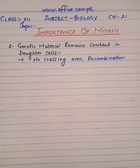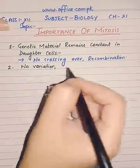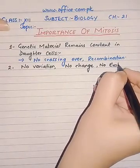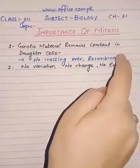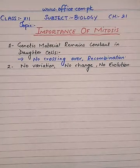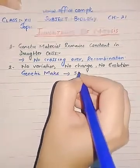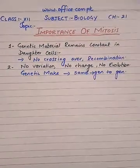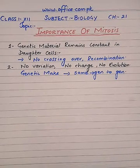No variation, no change, and hence no evolution. You can fairly understand and relate the previous point: when there is going to be no crossing over or no recombination, ultimately the whole genetic makeup will remain the same from generation to generation, and ultimately there will be no evolution. There will be a continuity of similar information, and the saving or protection of genetic information will be ensured in the daughter cells.